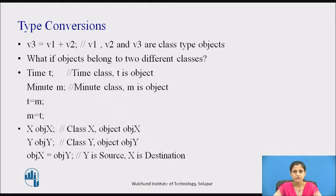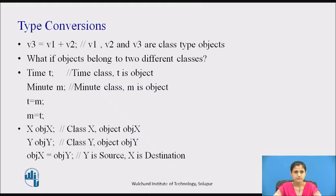In case of class objects, the values of all the data members of the right-hand object are simply copied into the corresponding members of the object on the left-hand. But what if the objects belong to two different classes? Consider two classes, Time and Minute. Time class represents time in hours and minutes. Minute class represents time in minutes. T is an object of Time class and M is an object of Minute class. What happens if our program contains statements like t = m or m = t? The compiler does not support automatic type conversions for user-defined data types. We must therefore design the conversion routines by ourselves if such operations are required.